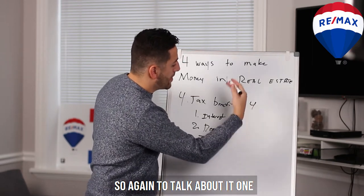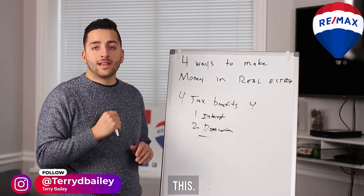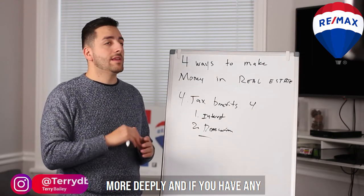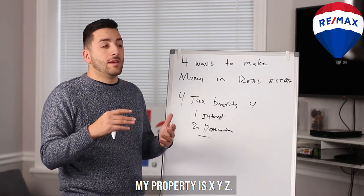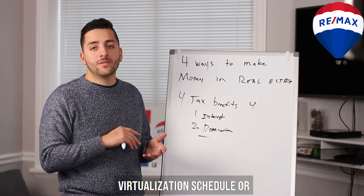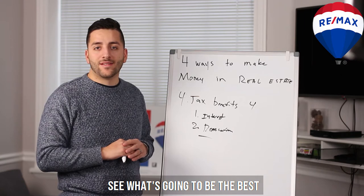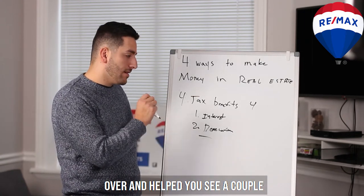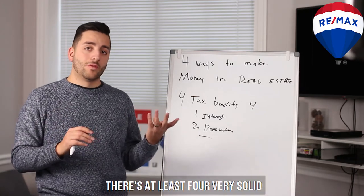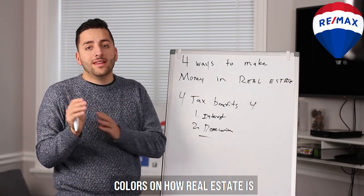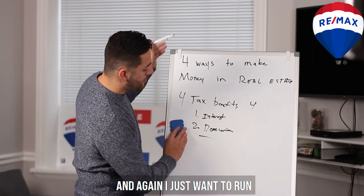There are other tax benefits too — owning a property management company, writing off travel to your properties, maintenance costs, and more. But interest deduction and depreciation are the two big ones most people don't go deep enough on. So to summarize the four ways: appreciation, debt pay down, cash flow, and tax benefits. Real estate is not a one-dimensional game — there are at least four solid pillars.